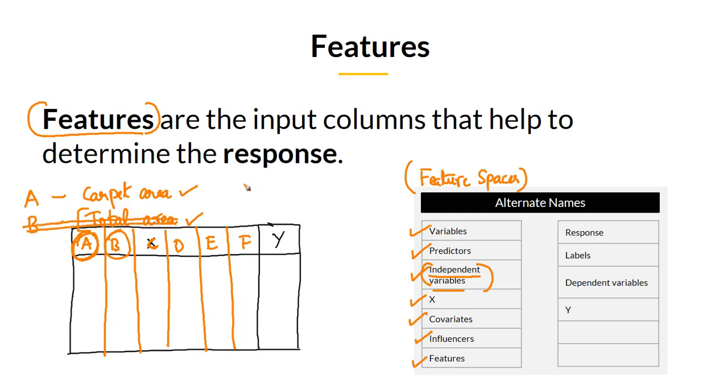Instead of total area you might have another variable B which you can call as common area. You can also have another variable C which is say the garden area, something like that which are not part of carpet area. So these are independent of each other. A, B and C, these can be independent of each other. And only if all these variables are independent of each other, we generally represent or call them as independent variables.